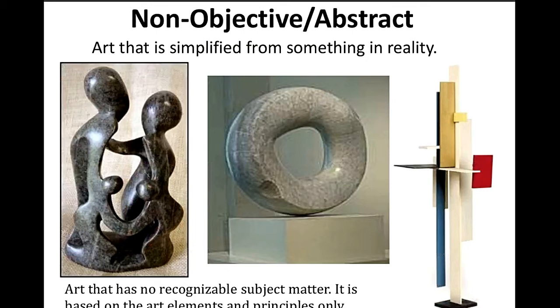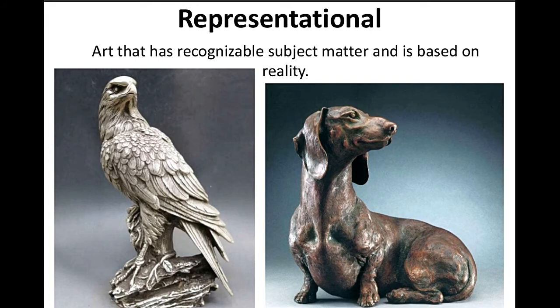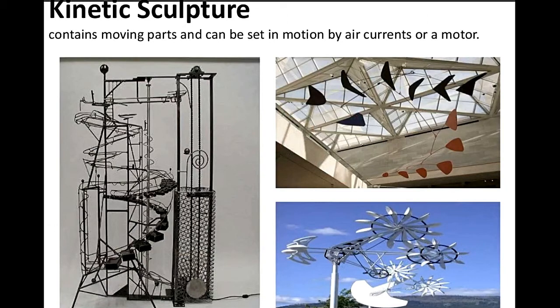Non-objective form of sculpture, sometimes called abstract art, is simplified from something in reality. Abstract sculpture is art that has no recognizable subject matter — it is based on the art elements and principles only. Representational sculpture, by contrast, has recognizable subject matter and is based on reality, for example animals. Kinetic sculpture contains moving parts and can be set in motion by air currents or a motor.